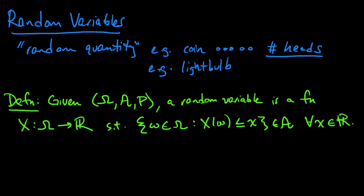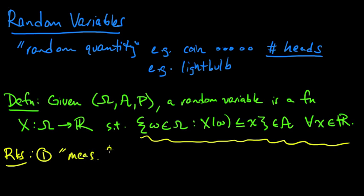So that is the definition of a random variable. Now let me make a couple of remarks here. First of all, this condition here is what we refer to as measurable. We call X a measurable function when it satisfies this condition. And this is sort of a technical condition. Usually it will turn out that most of the time naturally occurring random variables will satisfy this. So the main thing to remember about the definition is that it's some function from omega to the real numbers.